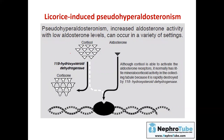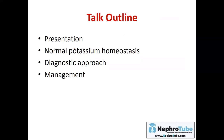Regarding licorice and hypokalemia: normally cortisol has aldosterone-like mineralocorticoid effects, but it is converted to cortisone by the enzyme 11-beta hydroxysteroid dehydrogenase, reducing its mineralocorticoid activity. Licorice and several other drugs inhibit 11-beta hydroxysteroid dehydrogenase, causing cortisol to accumulate at high levels. This high cortisol then stimulates aldosterone receptors with its mineralocorticoid effect, causing hypokalemia.